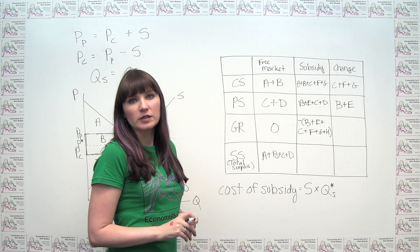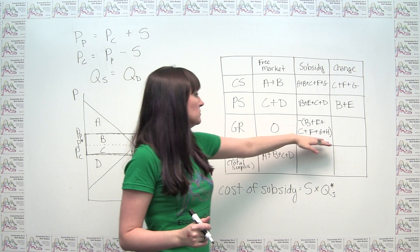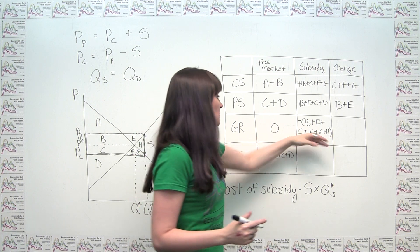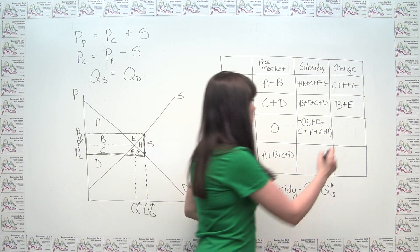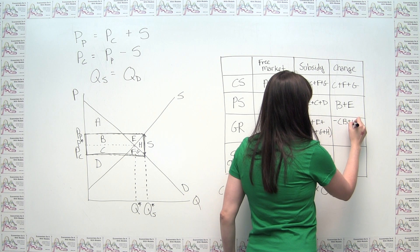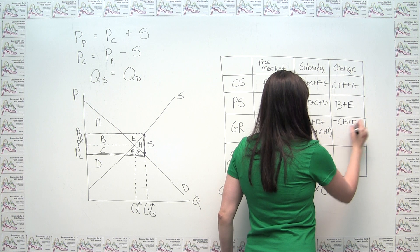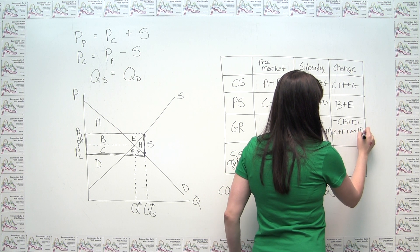The government, unfortunately, is made worse off because it used to be spending zero. Now it's spending all this stuff. So its change is just this minus zero. So it's just this whole thing over again: negative B plus E plus C plus F plus G plus H.